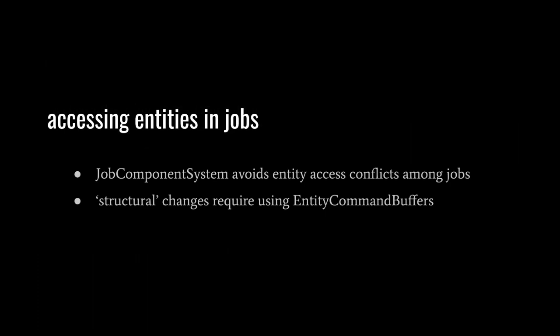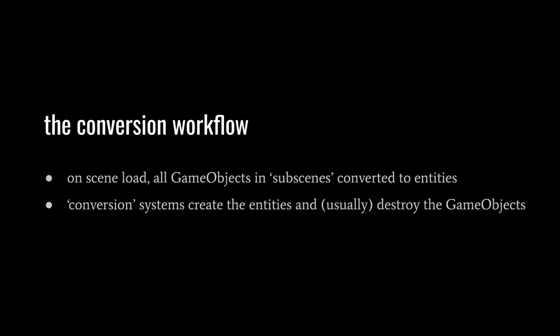We can access entities and their components in jobs using special job types, but two concurrently scheduled jobs will conflict if they access the same entity components. To fix such conflicts, one job must be scheduled as a dependency of the other. Safety checks in the editor will catch these conflicts. To help chain dependencies between jobs, we use a variant of ComponentSystem called JobComponentSystem. While we can read and mutate entity components within jobs, we cannot make structural changes in a job — we can't add or remove entities or components. A job can instead record changes with an entity command buffer to be enacted after the job finishes.